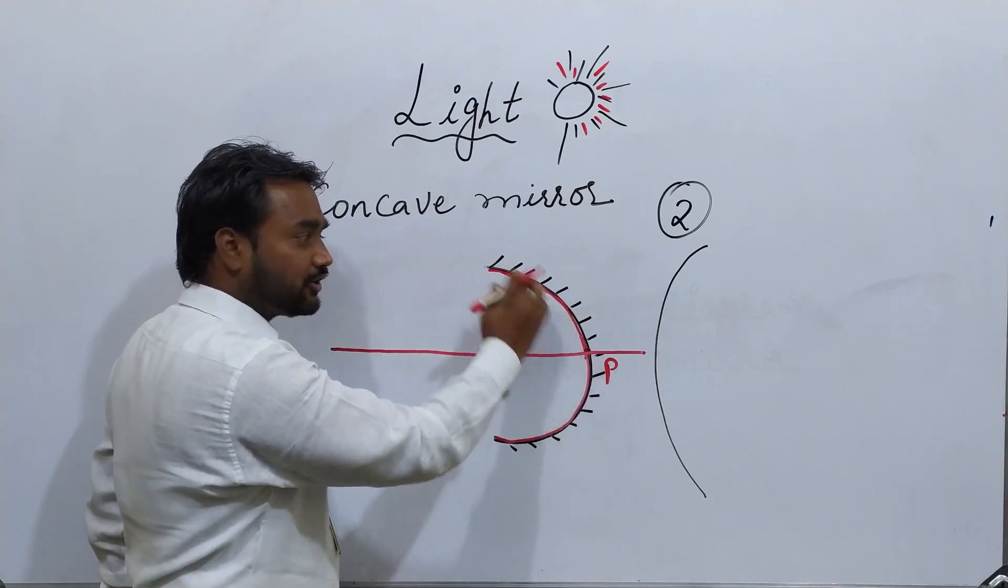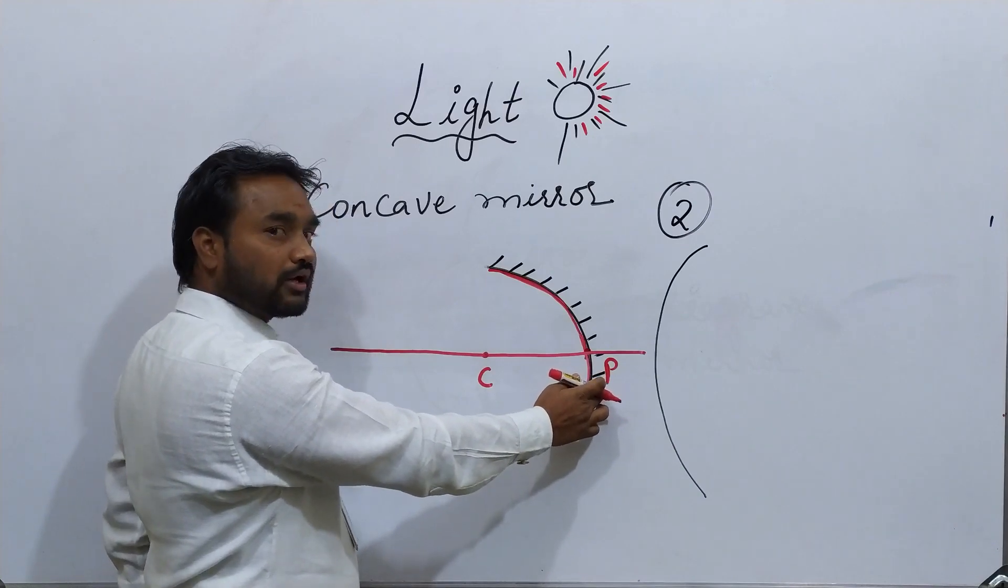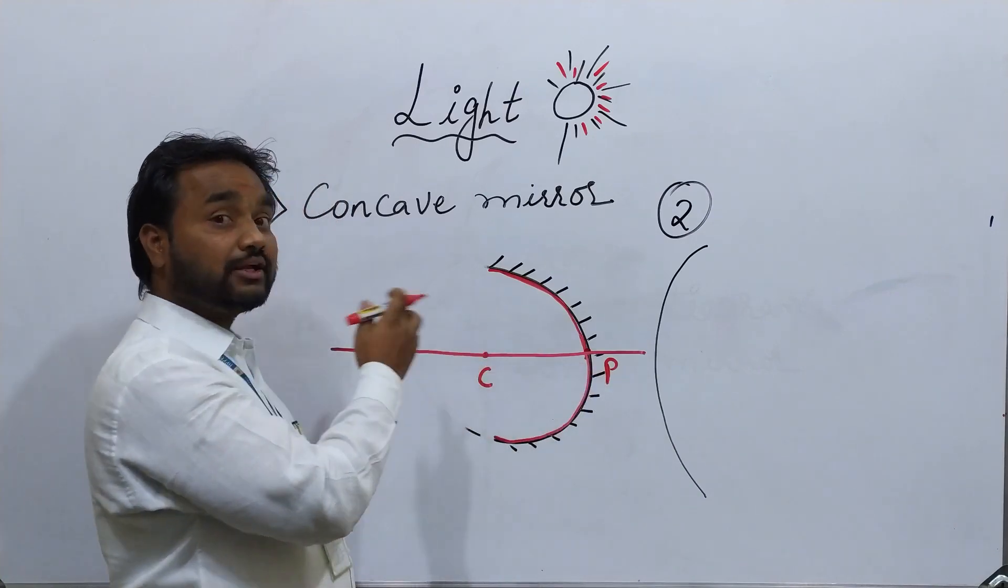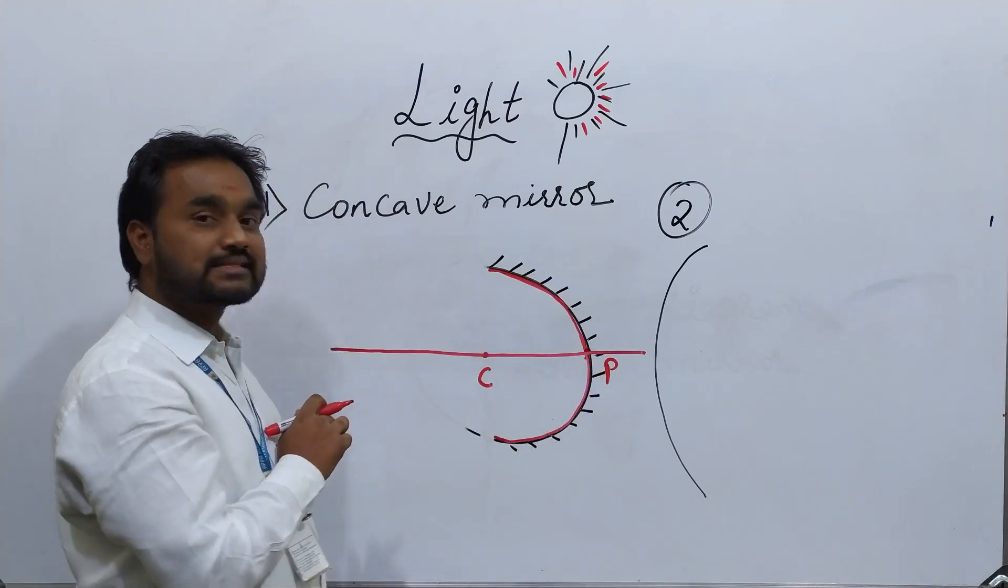This is the center of the reflecting surface. So I call it as a pole and this is the center of the spherical mirror which I call it as center of curvature.